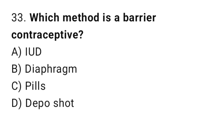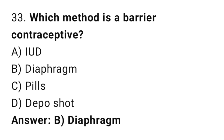Question 33: Which method is a barrier contraceptive? The right answer is B, the diaphragm. The diaphragm blocks sperm from entering the cervix.